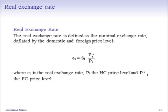So what is the real exchange rate? The real exchange rate is defined as the nominal exchange rate deflated by the domestic and the foreign price level. In this formula, ET is the real exchange rate, PT is the home currency price level, and P star T is the foreign currency price level. The key point here is that if prices exactly offset changes in the nominal spot rate, then the real exchange rate would always be equal to 1, and therefore there would be no real exchange rate risk.